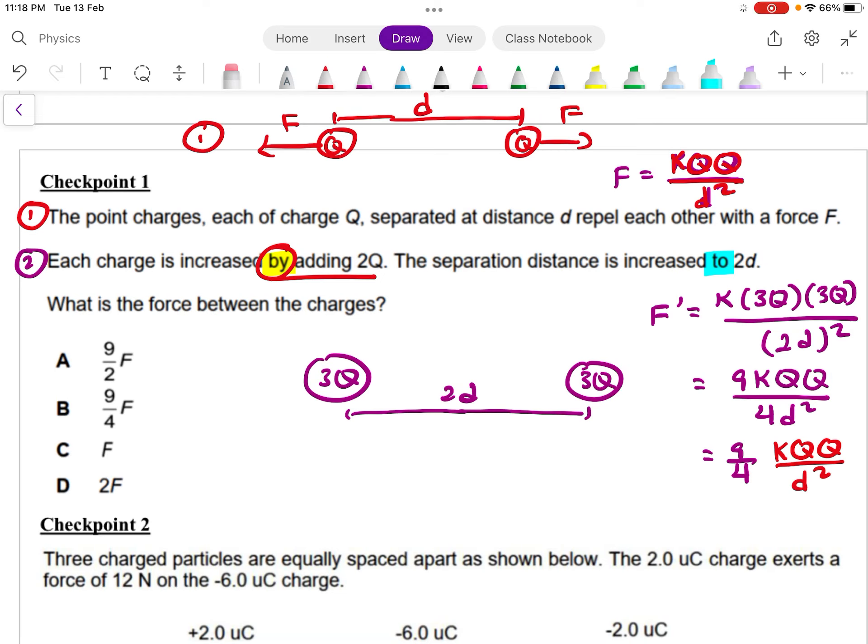Okay, so of course, now the charge is not 2Q, it's 3Q, because Q plus 2Q is become 3Q, right? So 3Q here, 3Q here. So the separation between them is now 2D.